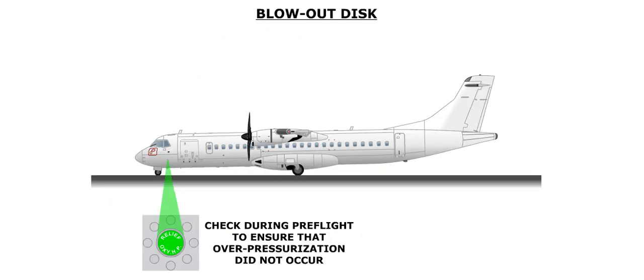In the event of an overpressure on either side of the pressure reducer, the content of the bottle will be discharged through a port located just forward of the main cargo door. The blowout disc needs to be checked during the pre-flight inspection to ensure that an overpressurization has not occurred. A normal disc will appear green.